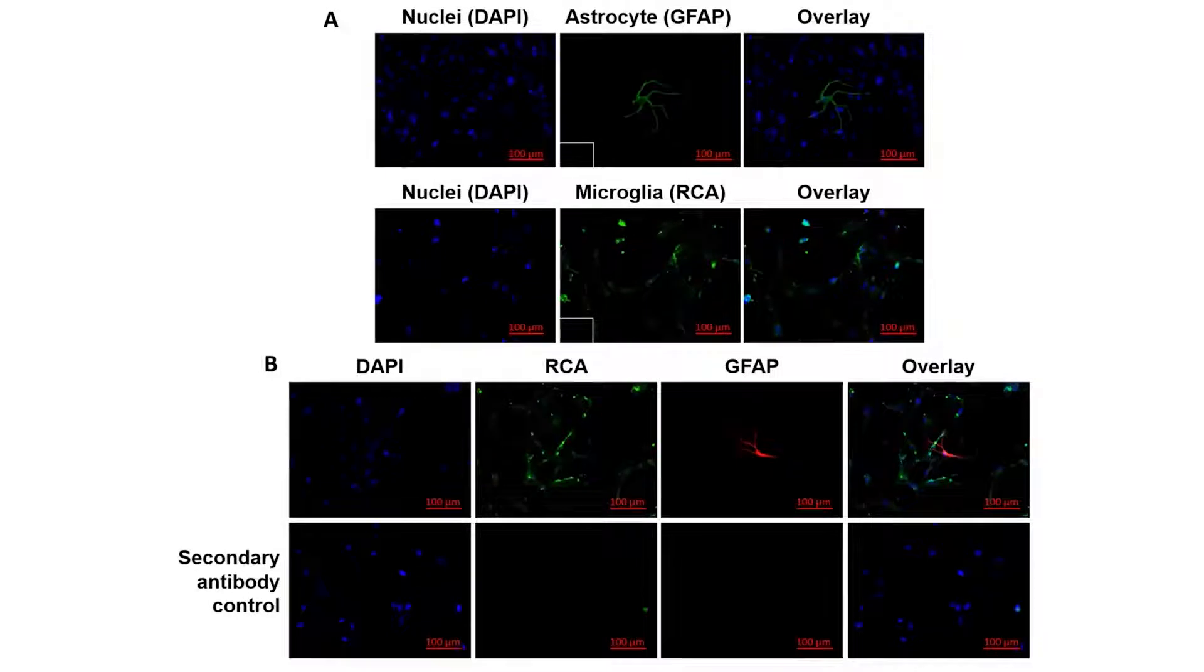Primary human microglia cells can now be characterized by using immunocytochemistry and used for further experiments.